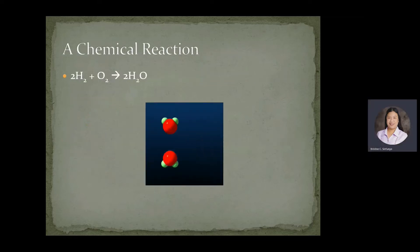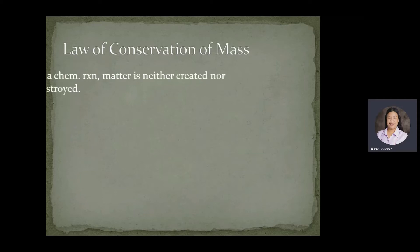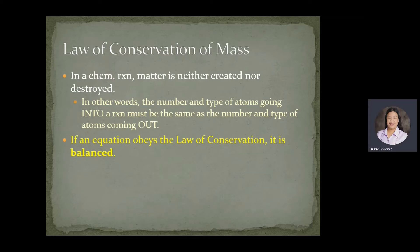This is an example of a chemical reaction — what happens when hydrogen and oxygen gas combine to form a water molecule. The idea of a chemical reaction is governed by the law of conservation of mass. In a chemical reaction, matter is neither created nor destroyed. In other words, the number and type of atoms going into a reaction must be the same as the number and type of atoms coming out. If an equation obeys the law of conservation, it is balanced.